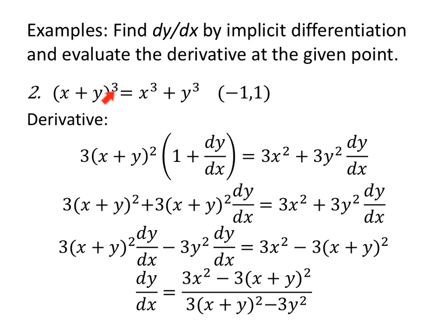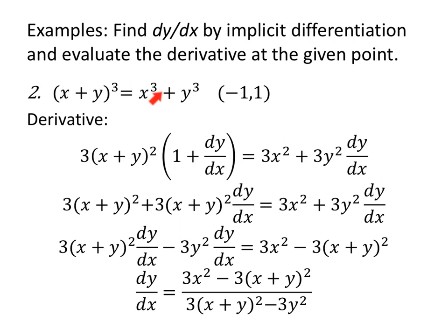Next: x plus y, all to the third power, equals x cubed plus y cubed at the point (−1, 1). On the left side we have a chain rule — something to the third power — so the derivative is 3 times that something squared, multiplied by the derivative of the inside: derivative of x is 1, derivative of y is dy/dx. On the right: derivative of x cubed is 3x squared, derivative of y cubed is 3y squared times dy/dx.